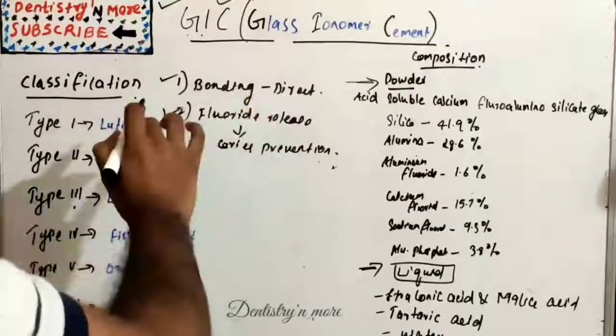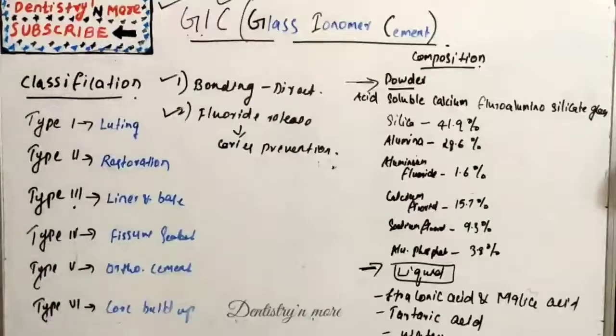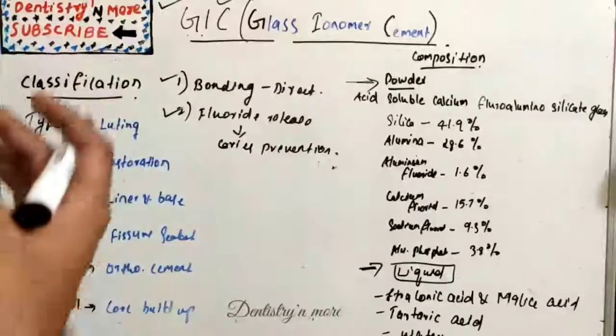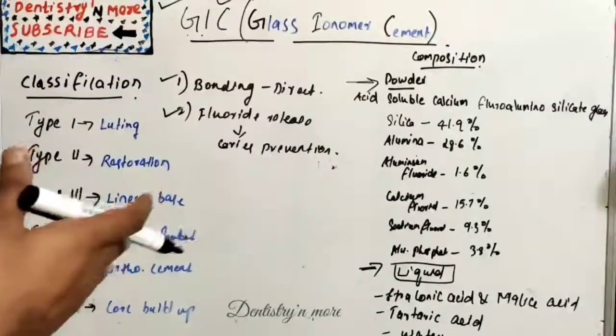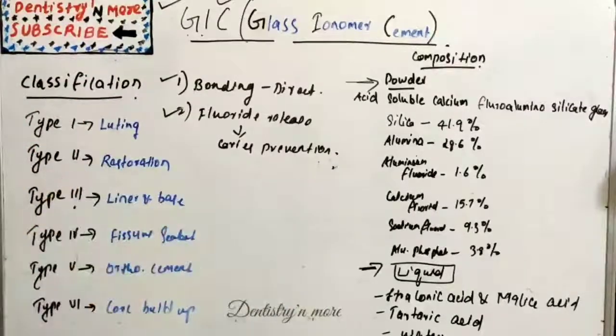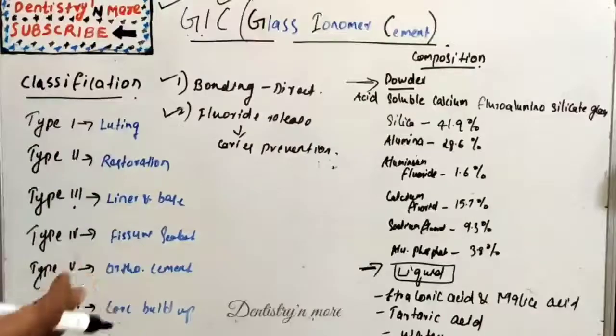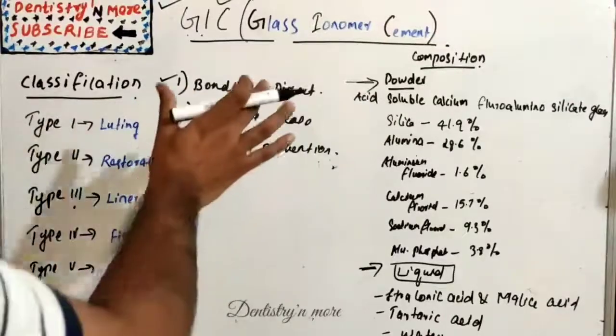We know the amalgam restorative material which needs a lot of cavity preparation and requires 90 degree butt joint, but this is direct bonding so it requires very minimal preparation.